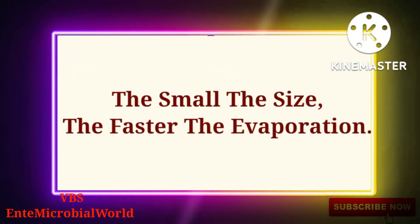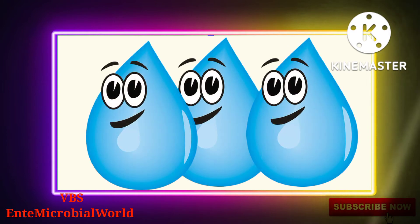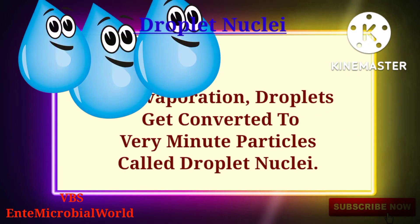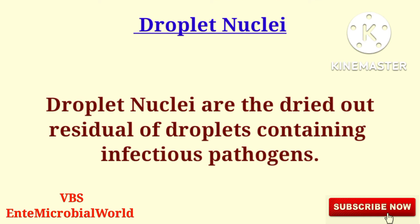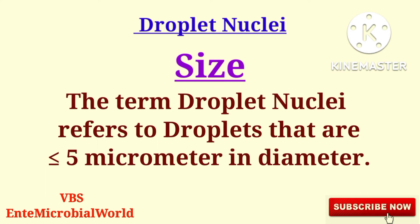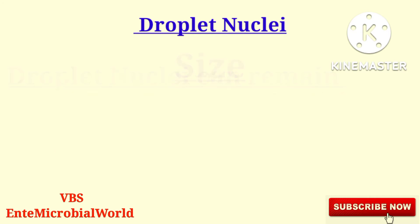Next we are going to see what are droplet nuclei. On evaporation, droplets get converted to very minute particles called droplet nuclei. Droplet nuclei are the dried-out residual of droplets containing infectious pathogens. Droplet nuclei are airborne particles containing viable microbes, and the term droplet nuclei refers to droplets that are less than or equal to 5 micrometers in diameter.